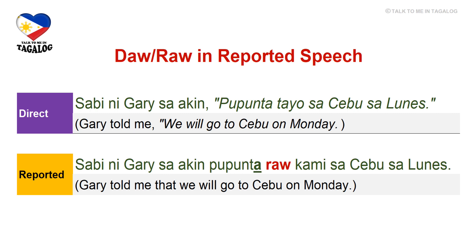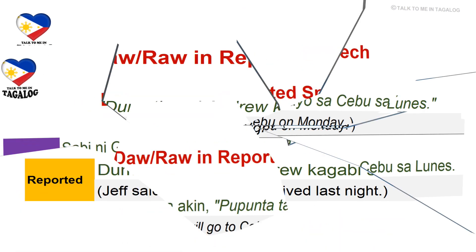You might be wondering why tayo and kami are different, although they both mean 'we.' Tayo in the direct statement means 'you and Gary.' Since you're now talking to a third person in reported speech — who is not going with you and Gary to Cebu — you should use the pronoun kami to exclude that third person when you repeat what Gary told you. To better understand tayo and kami, we have videos about Tagalog pronouns in this channel — please check them out.